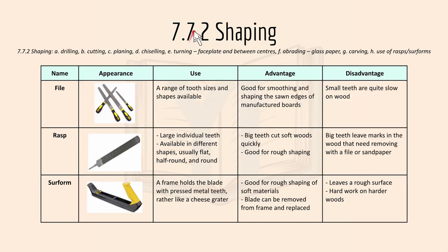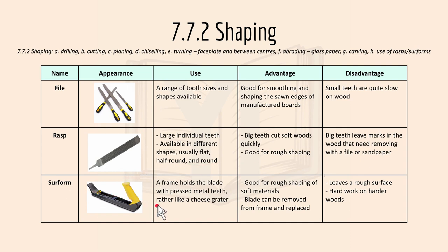Then we have 7.7.2 shaping for files and rasps. Files have a range of sizes and shapes available; they're good for smoothing and shaping the swollen edges of a manufactured board, but the small teeth are quite slow on wood. A rasp has large individual teeth and is available in different shapes, usually flat, half round, and round. The big teeth cut soft wood quickly and are for rough shaping, but the disadvantage is that the big teeth can mark the wood, needing removal with a further file or sandpaper. A surform holds a blade with pressed metal teeth, rather like a cheese grater — it's good for rough shaping of soft materials and the blade can be replaced, but it leaves a rough surface and is hard work on harder woods.